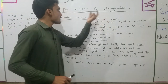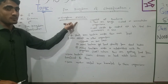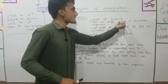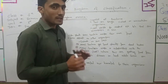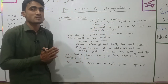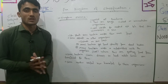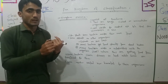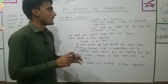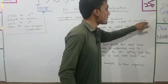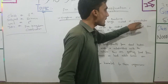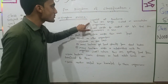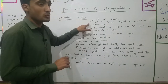All bacteria are included in kingdom Monera. They are single-celled or unicellular organisms. Bacteria are unicellular — 'uni' means one and 'cellular' means cell, so unicellular means made from one cell.